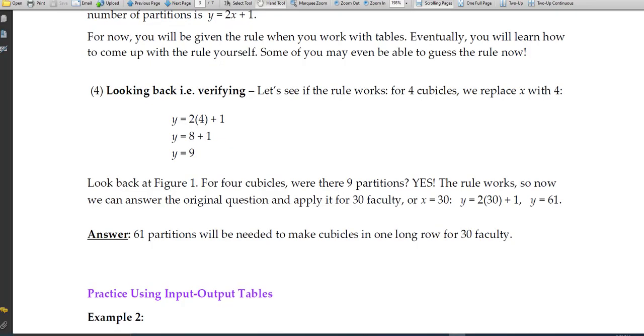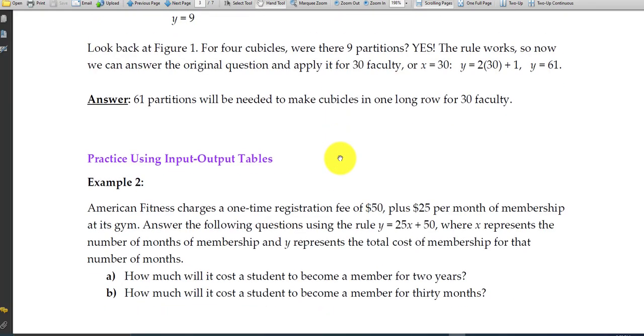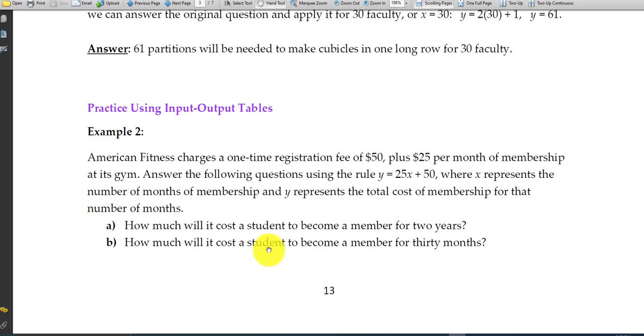For this next video I'd like to continue where we left off working with input-output tables to answer problems. If you go into Canvas, you'll see a handout number two. It looks something like our example two on the bottom of page 13, American Fitness. I'm going to open this up in my whiteboard.